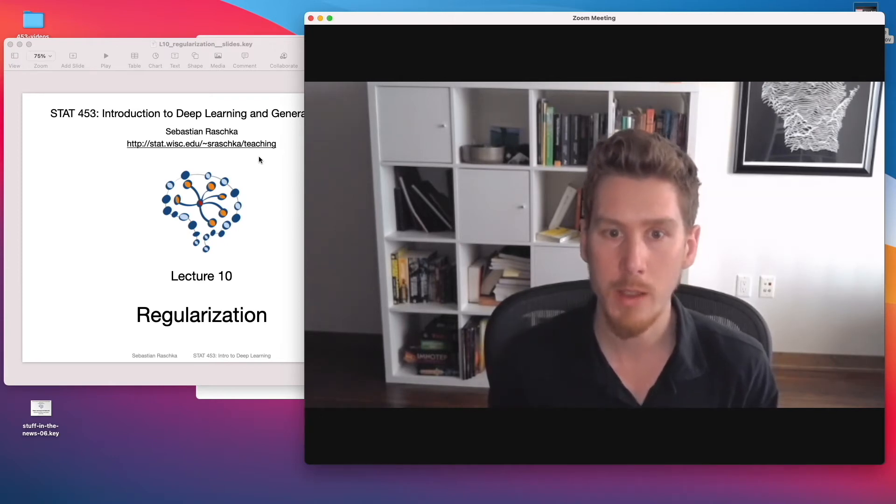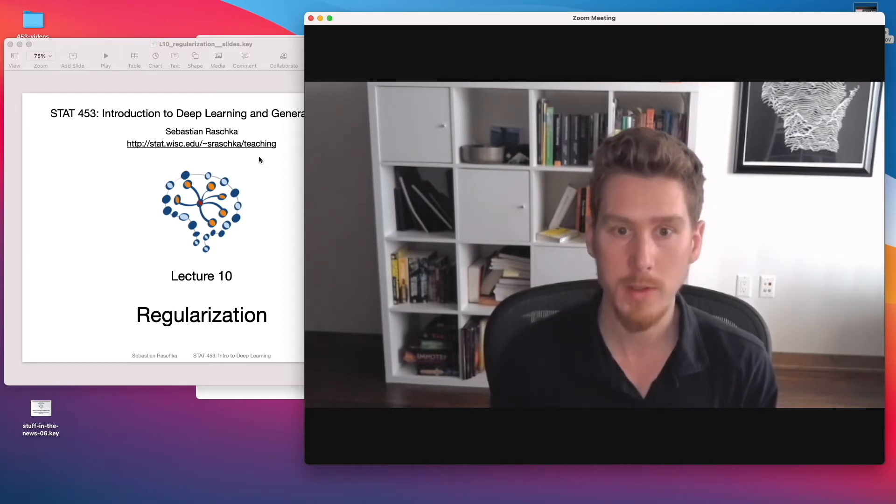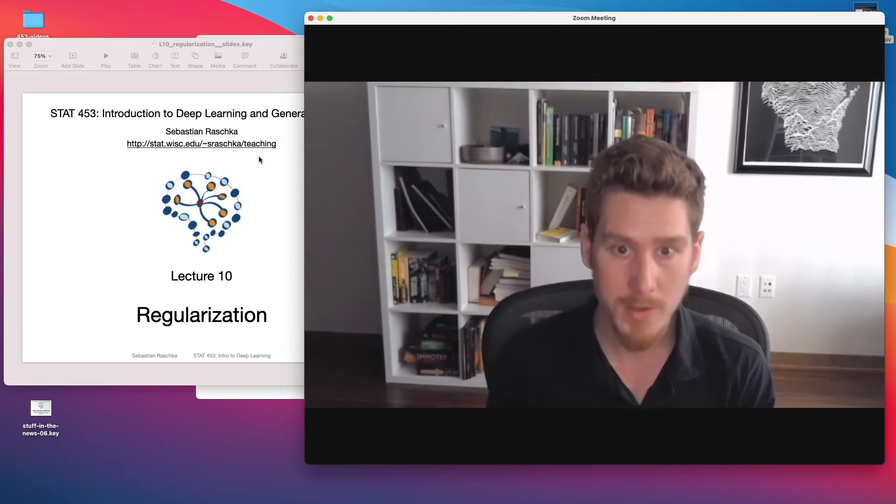So there are other techniques for regularization that we can use. For example, one is L2 regularization. You've probably already heard about L1 and L2 regularization in other statistics classes - it's basically shrinking the weights. You probably have heard of it in the context of lasso regression or ridge regression. In this lecture, I want to show you that we can use the same concept for neural networks. And then I will introduce maybe one of the most common and popular techniques for regularizing neural networks, and that is called dropout.